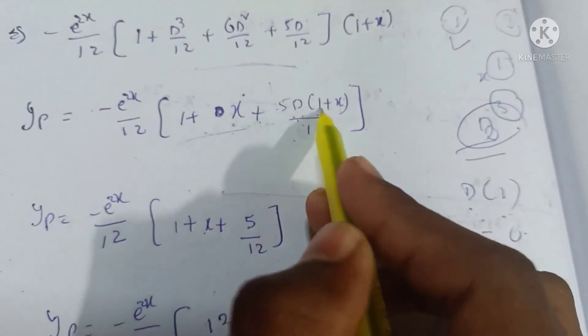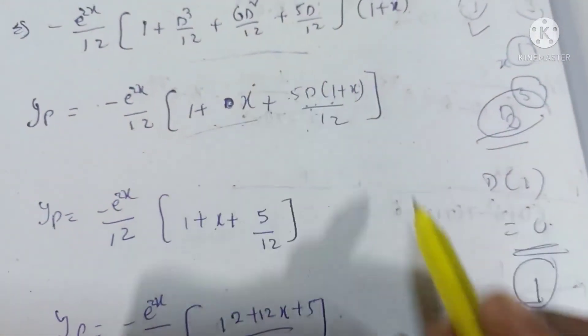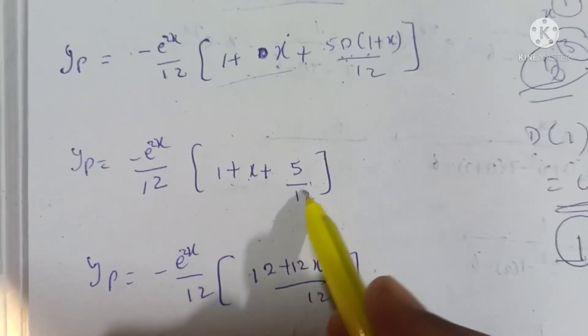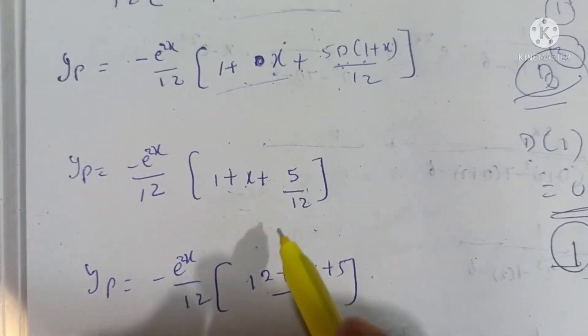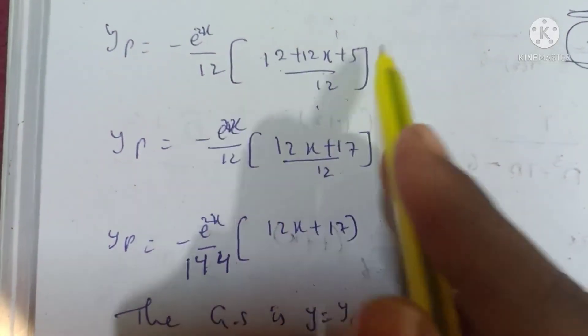The derivative of 1 is 0, and the derivative of x is 1. So 5 × 1 = 5/12. Therefore, taking LCM of 12: we get (12 + 12x + 5)/12 = (12x + 17)/12.